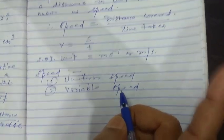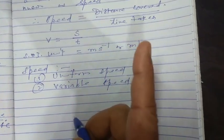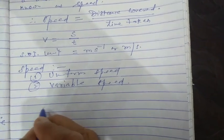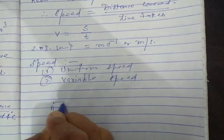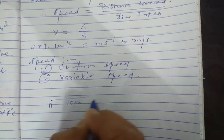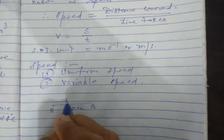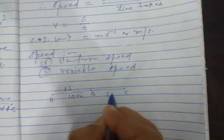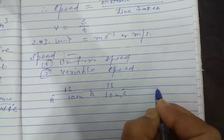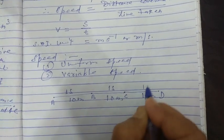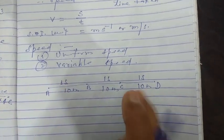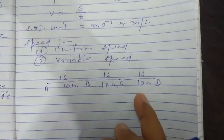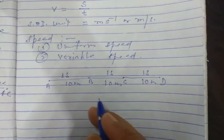Uniform speed: when a body covers equal distance in equal interval of time, it is said to be moving with uniform or constant speed. For example, suppose a body covers 10 meters from A to B in one second, then from B to C again 10 meters in one second, from C to D again 10 meters in one second. Since time interval and distance travelled are the same, the object is moving with uniform speed.